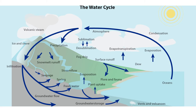Sometimes when the air rises over continents, over mountain ranges, clouds form, rain forms, and the water drops on land. Then it enters into the soil, gathers in rivers, and comes right back to the ocean.